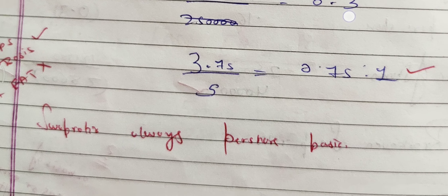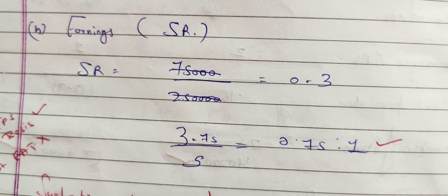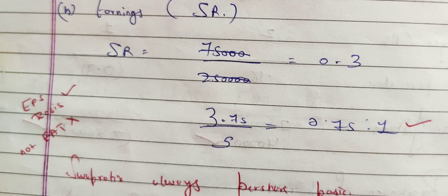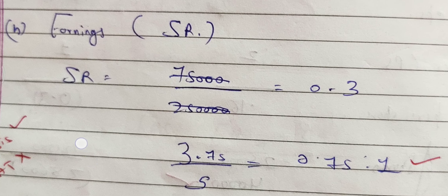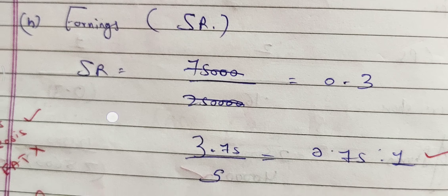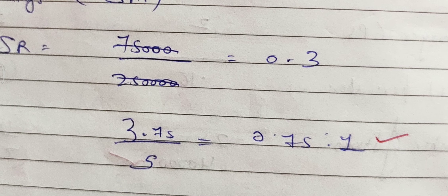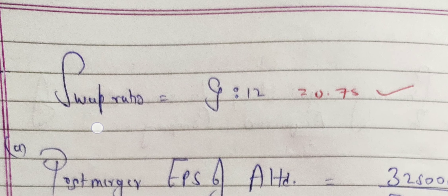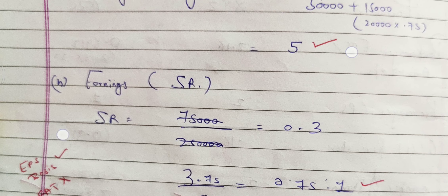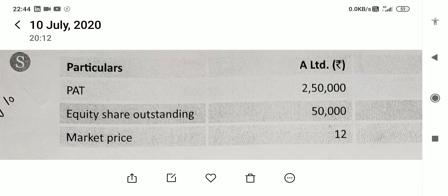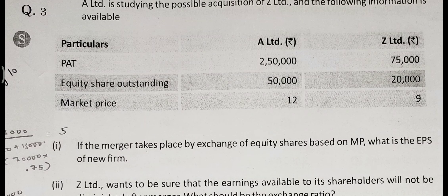The swap ratio here is also 0.75, same as the first point based on market price. So this can be a coincidence. The swap ratio in both cases — based on market price and based on EPS — comes out to 0.75. So question 3 was easy; there were no particularly tricky points. Next, we will do question number 4 in the next video.